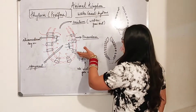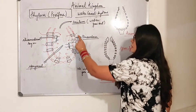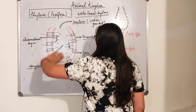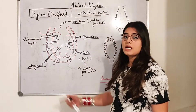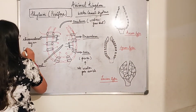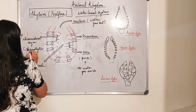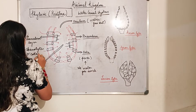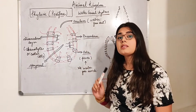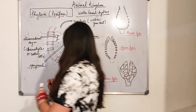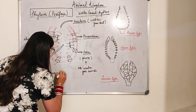Now we are going to see that this canal is entirely made up of two layers: the coanoderm layer and the pinacoderm layer. The outermost layer is the pinacoderm layer, and the inner layer is the coanoderm layer. You can see the coanoderm layer has coanocytes, or collar cells — they have coanocytes or collar cells. They also have flagella. The function of flagella is that it helps in the movement of water.